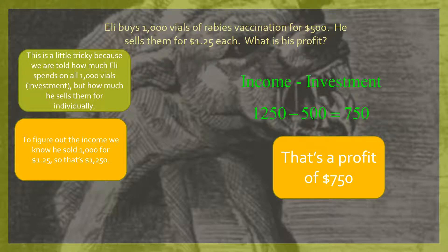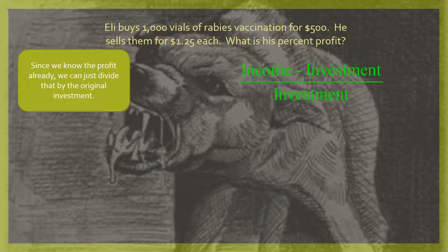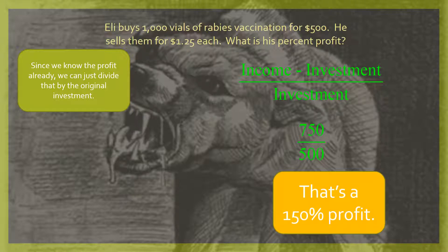That's pretty tidy. You guessed it — of course we're going to be asked next: what is his percentage of profit? A lot of times the problem will just ask you this without doing what we just did, so you have to figure out the profit before you can figure out the percent profit. Once we have the profit — $750 — all we have to do is divide by the original investment of $500. That's 150%. He made 150% profit. That is a pretty tidy cleanup.